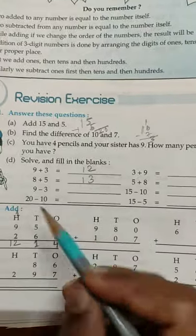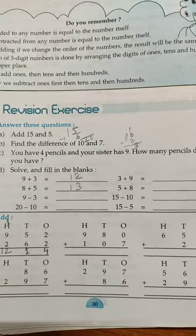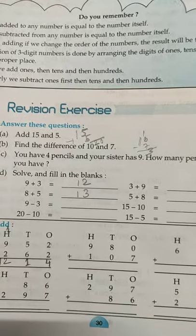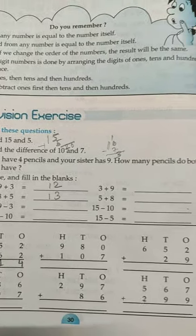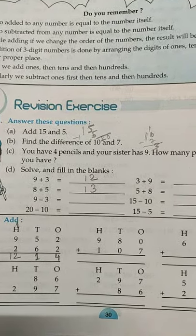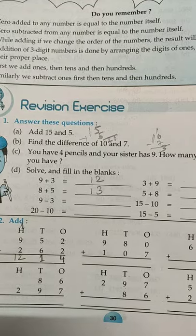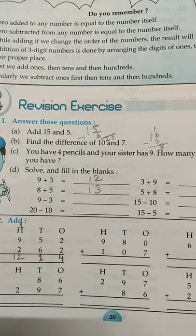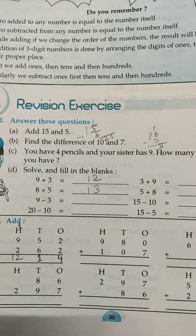And the statement. One statement sum in question number 3: you have 4 pencils and your sister has 9. How many pencils do both of you have? So that will be the addition. Suppose you have 4 pencils, your sister has 9. So you need to add 4 plus 9.